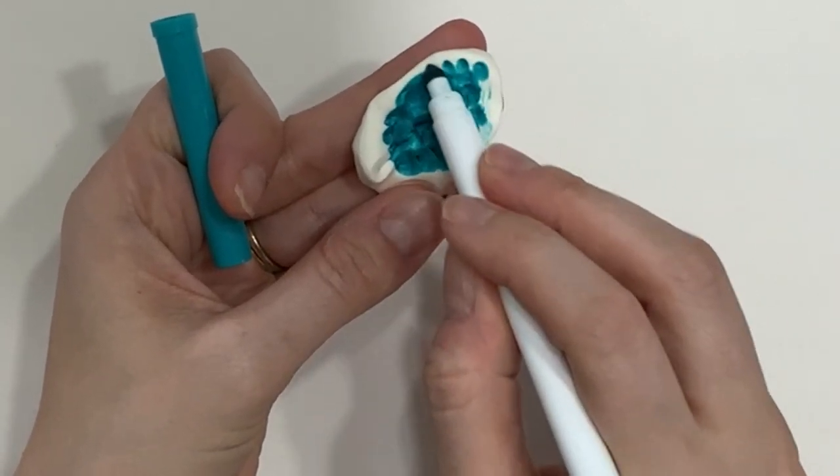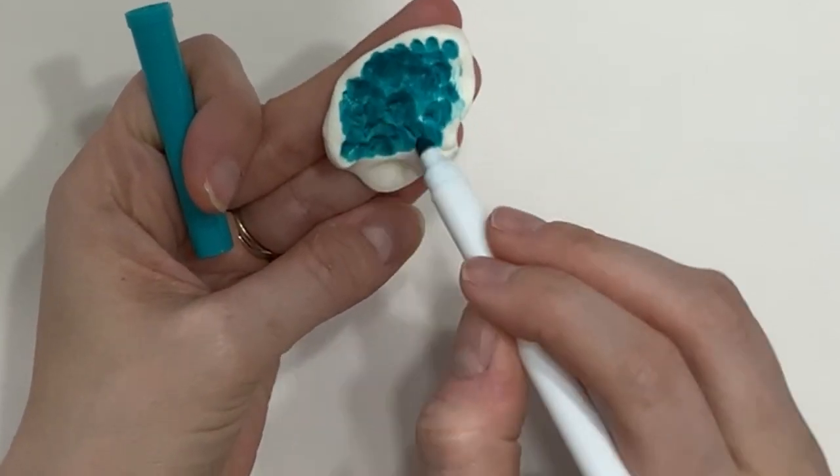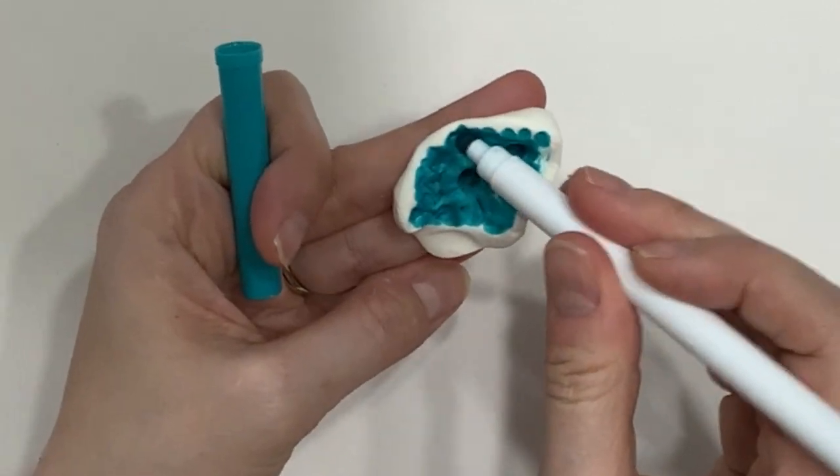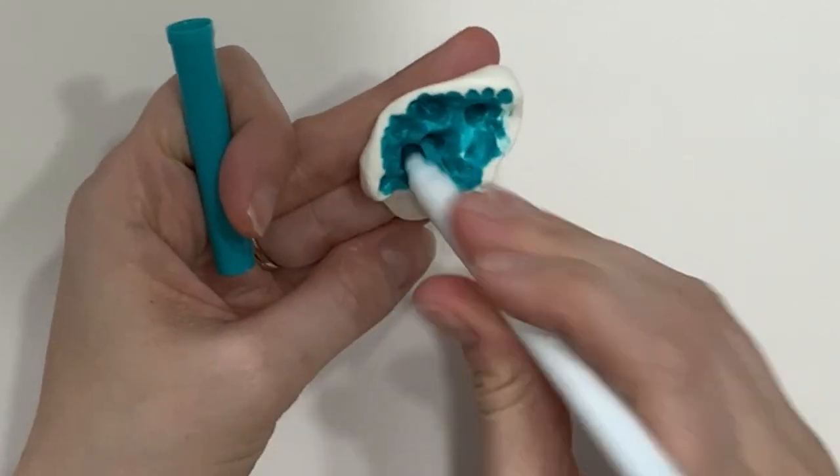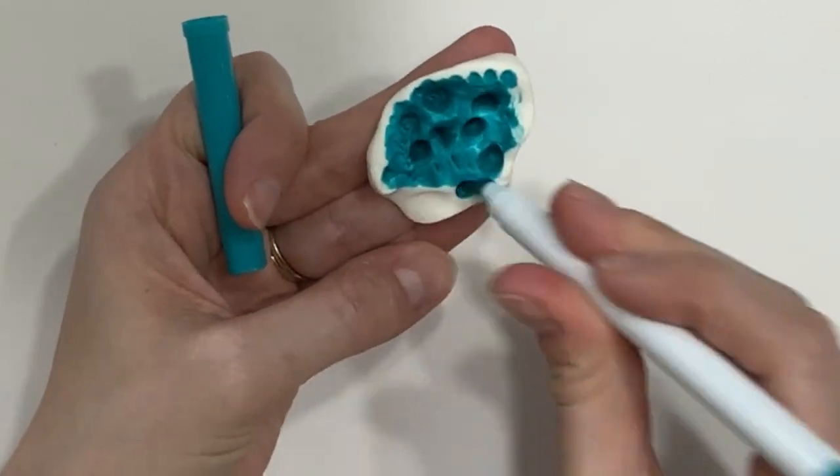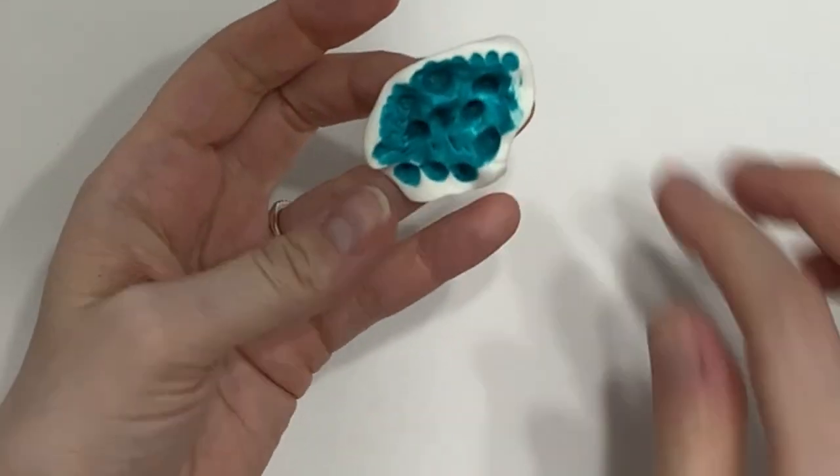Once you feel like you've had enough, go ahead and start to mix and mold the Model Magic in your hands, pulling it apart and mixing it and smooshing it back together. You'll see a transformation take place as your Model Magic goes from white into the color that you created.